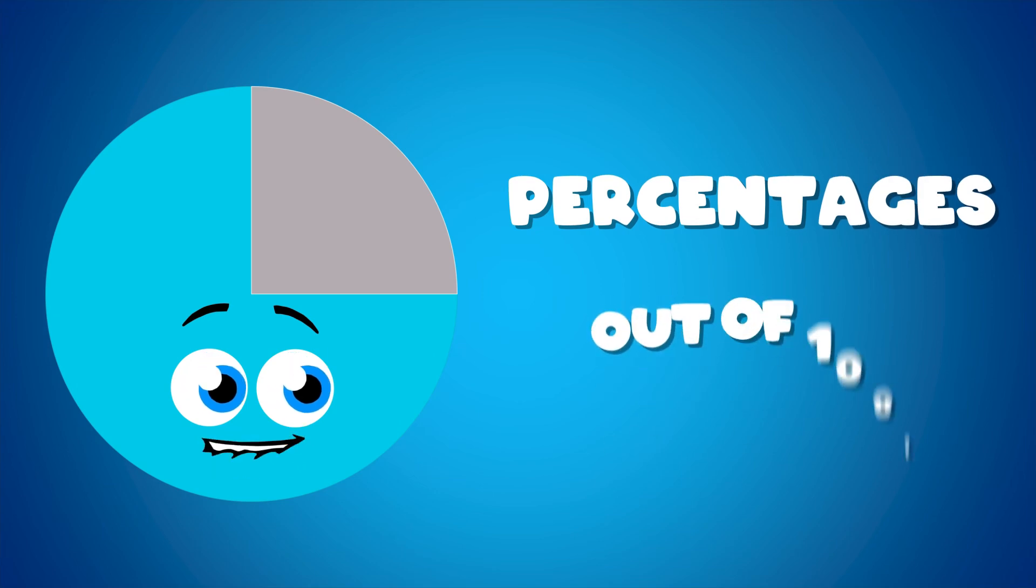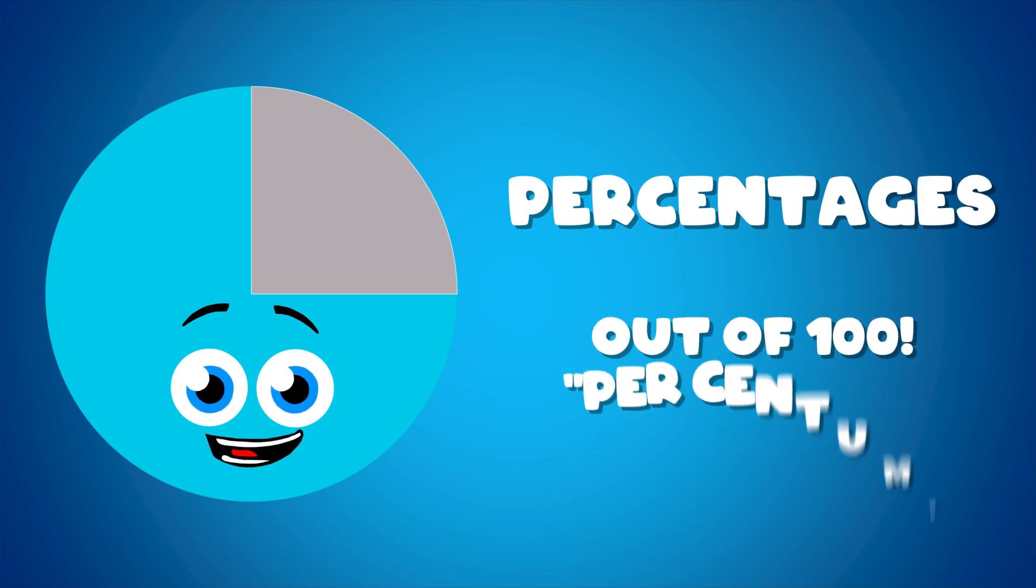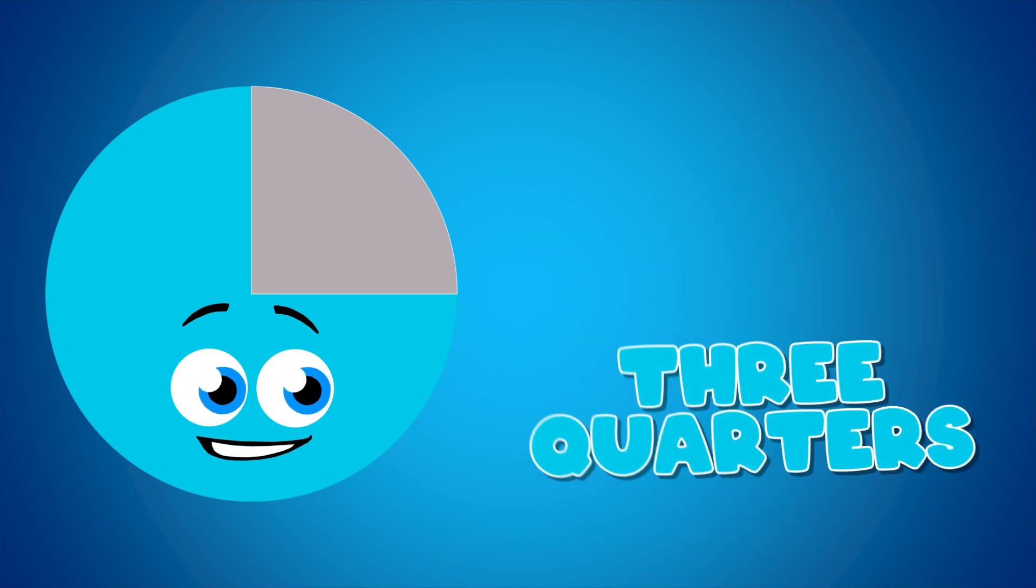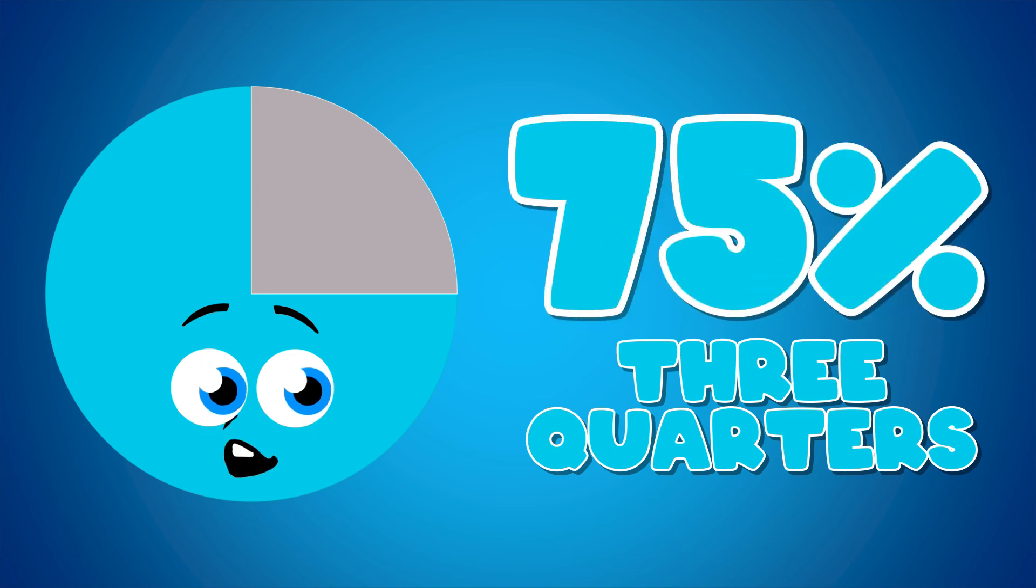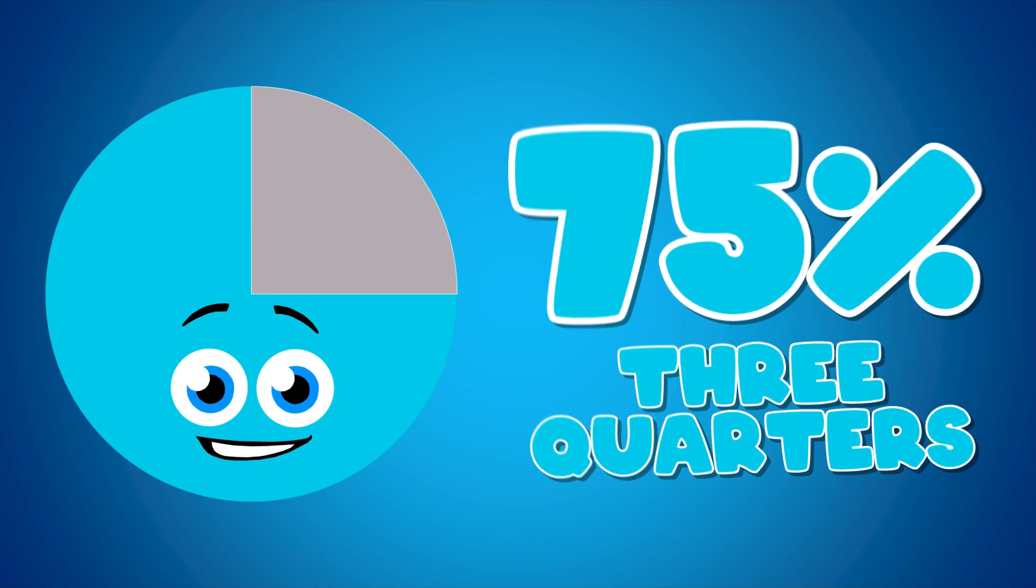Percentages are out of 100 as you have guessed. This came from the Latin percentum, which means by hundred. For example, if you have three quarters of a whole, that would be 75% out of 100, you can see.